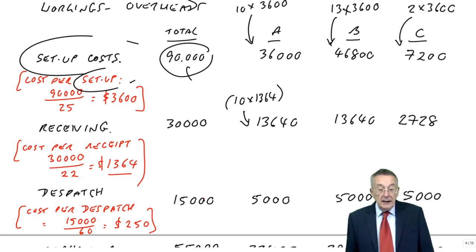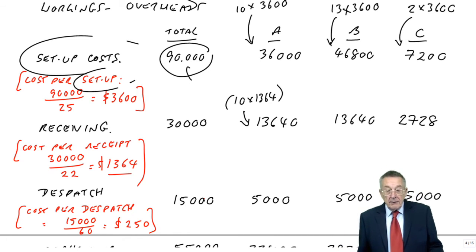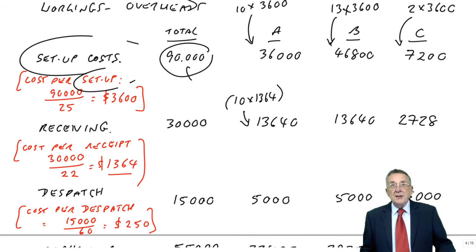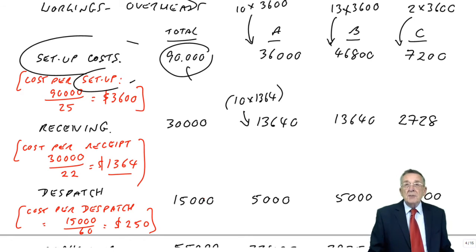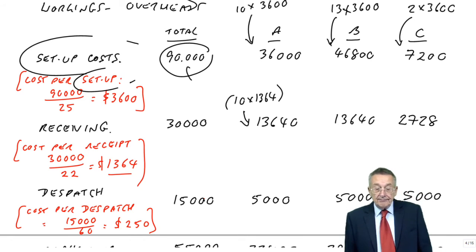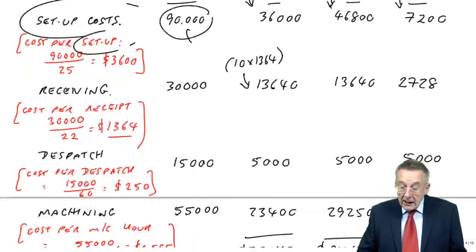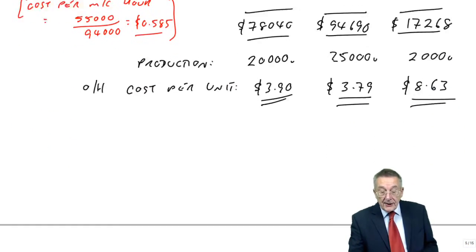then we can try and think of ways of being more efficient, using less men, or receiving, receive bigger quantities each time, have bigger orders each time, so we don't need as many people checking things in, and so on. So, those are the strengths of activity-based.